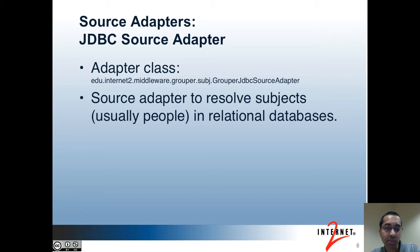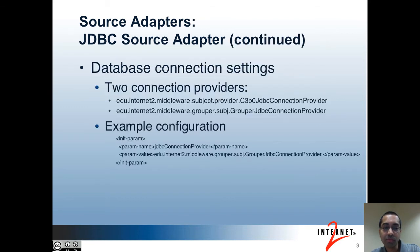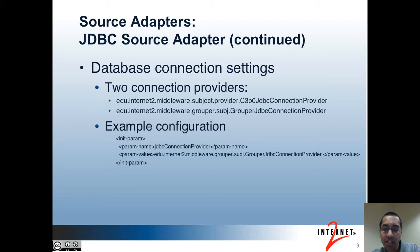But it can be other types of subjects as well — for instance, perhaps you have service accounts or objects such as computers. In the sources.xml file, you first have to provide the database connection information. There are two connection providers available. Using the default option, you have to provide all of the connection information in the sources.xml file, including the JDBC URL, the username, and the password. Though when you specify the password value, it can either be an actual password or a file name that contains an encrypted copy of the password.